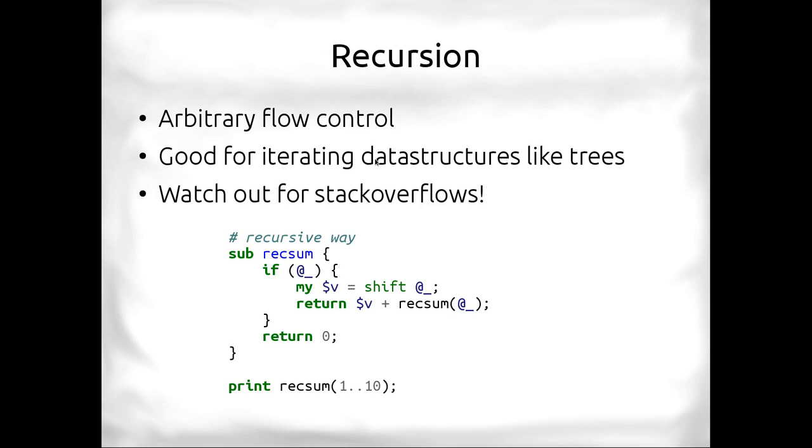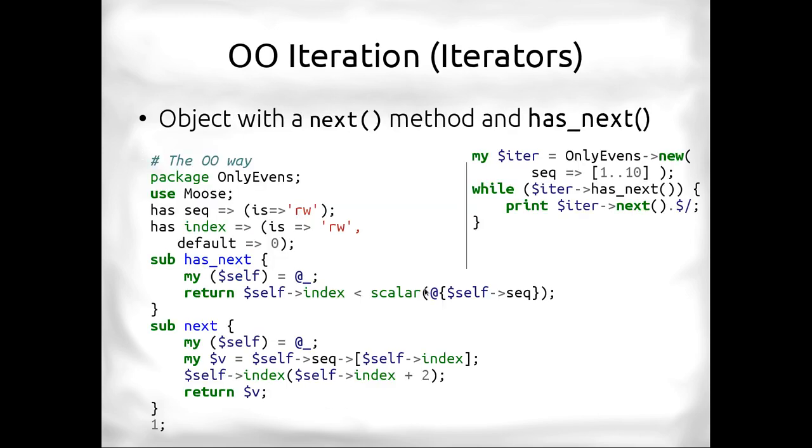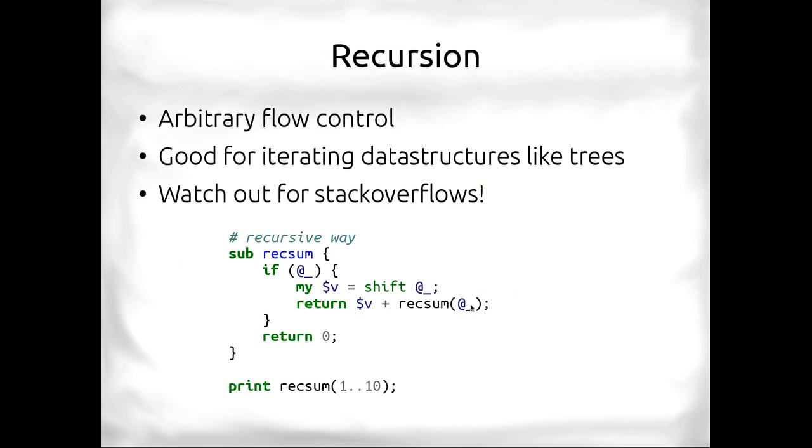Another way to do iteration is recursion. Recursion is relatively complicated for most, but it allows arbitrary flow control. And it's good for iterating data structures like trees. The problem with recursion is often times there's stack overflow because you go too deep into the stack. So here's an example of recursive iteration. We first have a condition. This condition is that there's elements in the arguments. But there's one or more elements in the arguments. So this will return false if there's zero arguments left. So what we do is we pop one off the head of that, we take that value, and we add it to our recursive sum.